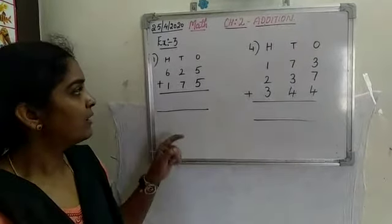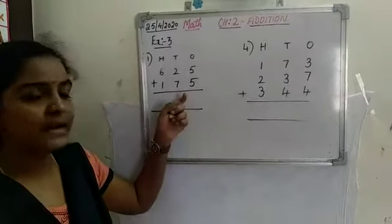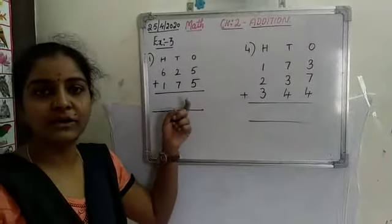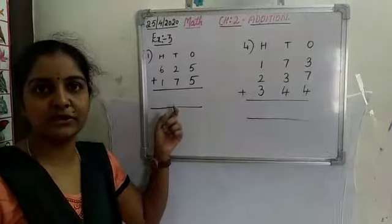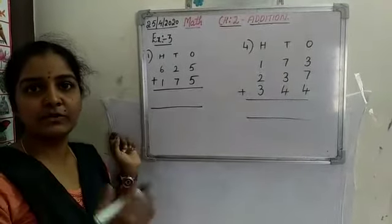Now, whenever we are adding numbers, we will always start from the ones place — from right to left.